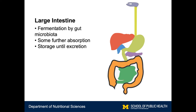The last compartment is the large intestine. This is where the gut microbiota exists. Any food that isn't absorbed in the small intestine passes to the large intestine and interacts with the gut microbiota. Sometimes this allows for more breakdown of food and some absorption. But a large role of the large intestine is to store food until it's ready to be excreted.